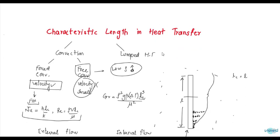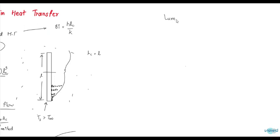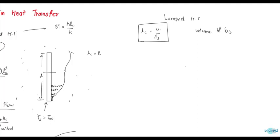Next comes lumped heat transfer. In the Biot number, Bi = h·Lc / k, for lumped heat transfer Lc is equal to volume divided by surface area. This is also an empirical value derived from experiments. The volume is the volume of the entire body, and the surface area is the area perpendicular to the heat flow direction.